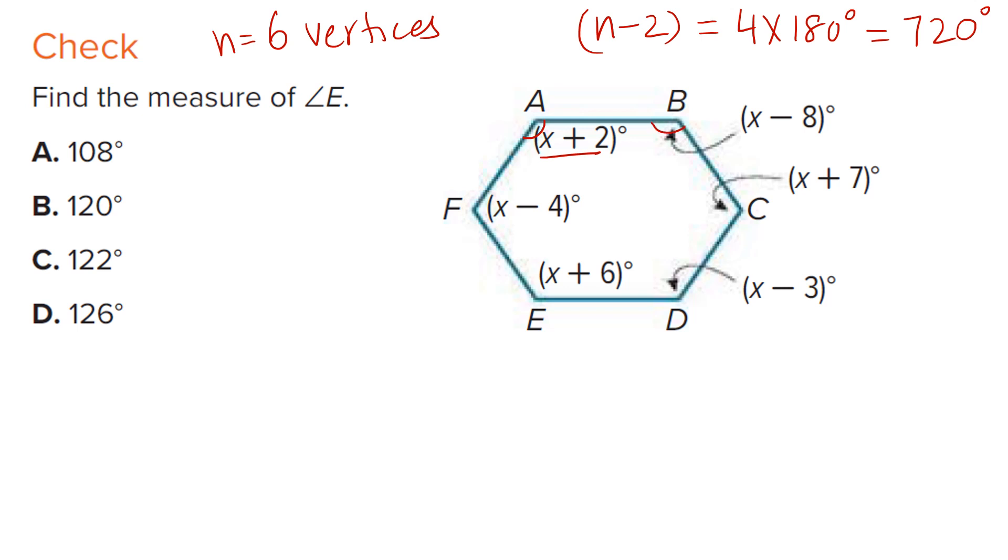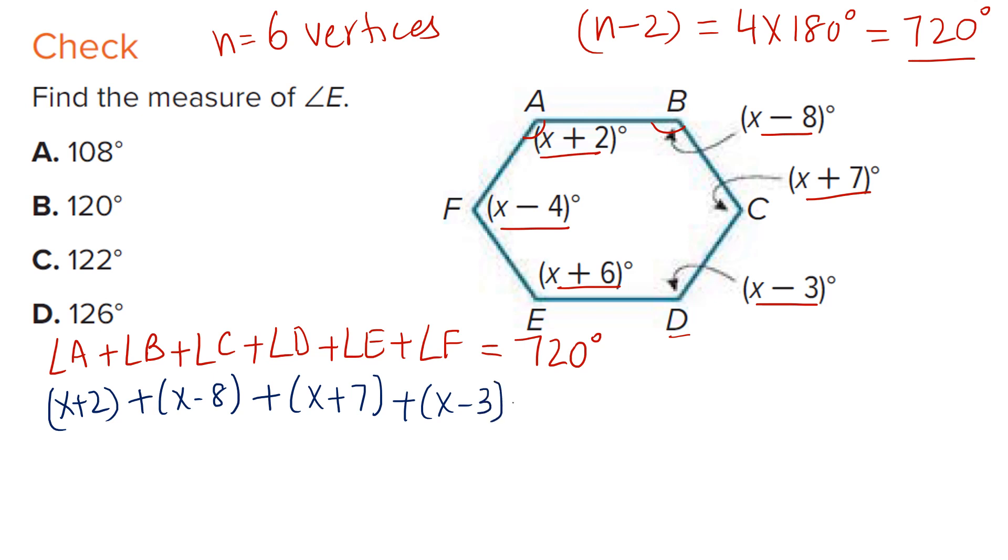So if the polygon has 6 sides, n minus 2 will be 4 and multiply by 180. Now the measure of angle is given. Angle A is this, Angle B is this, Angle C is this, Angle D is this, Angle E is this, and angle F is this. So we can just add them all and put them equal to 720 to get the value of x. After we get x, we can easily get angle E. So let's add them up. Angle A plus B plus C plus D plus E plus F. Now notice these all are interior angles. They are inside the polygon. So that's equal to 720 for this one. So let's put in the values. Angle A is x plus 2, Angle B is x minus 8, Angle C is x plus 7, Angle D is x minus 3, Angle E is x plus 6, Angle F is x minus 4. And that's equal to 720.